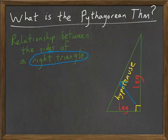The other sides are called legs. We usually use the letters A and B to denote the legs, and C to show the length of the hypotenuse.